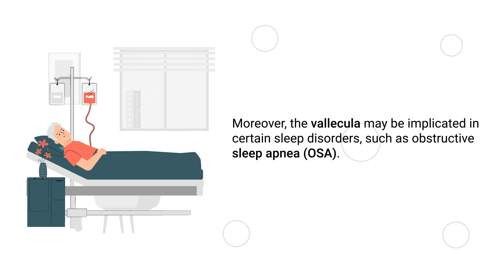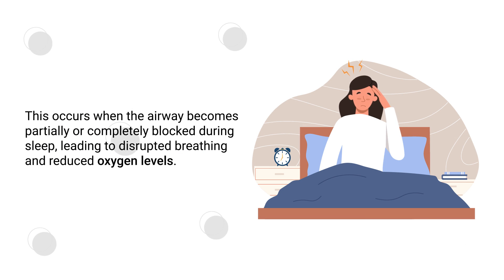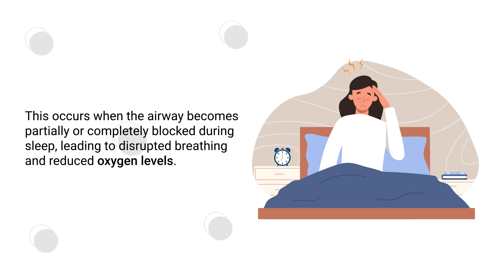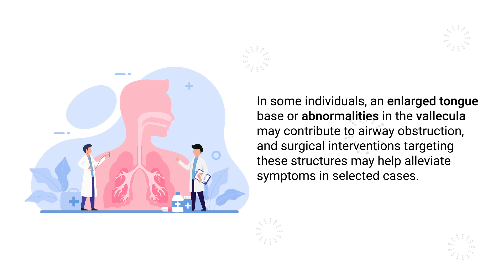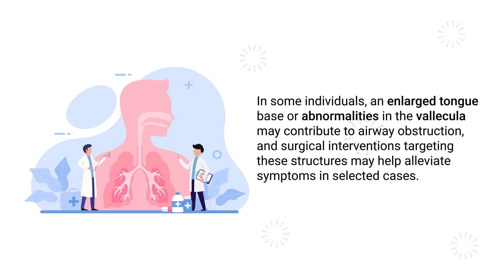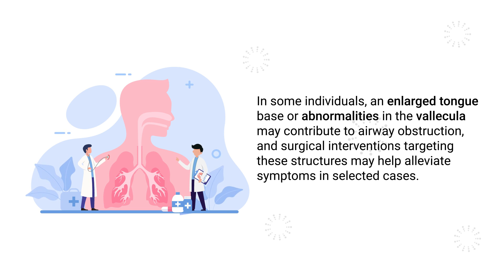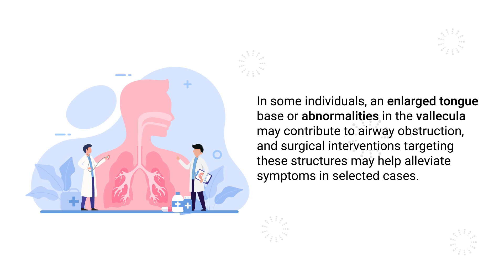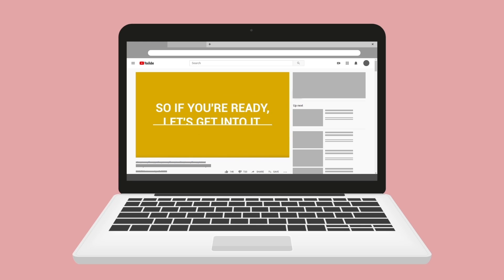The vallecula may also be implicated in certain sleep disorders such as obstructive sleep apnea. This occurs when the airway becomes partially or completely blocked during sleep, leading to disrupted breathing and reduced oxygen levels. In some individuals, an enlarged tongue base or abnormalities in the vallecula may contribute to airway obstruction, and surgical interventions targeting these structures may help alleviate symptoms in selected cases.